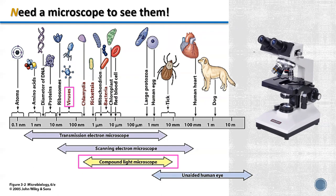When we use this compound microscope, we can look at some creatures ranging from one millimeter to even nanometers in length. For example, we can see ticks, the small insect-like animal, worm eggs, red blood cells, chloroplasts from plants, bacteria, and even very small bacteria like chlamydia.